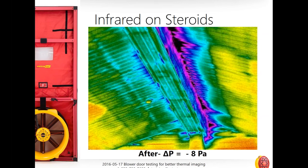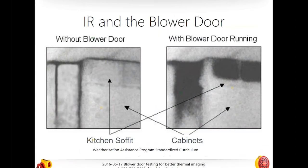When temperature is similar between inside and outside, just using a little bit of blower door can make a big difference. And even when there's quite a bit of temperature difference, it's really important to use the blower door with the infrared camera because it gives us images on steroids — it immediately makes a big impact and accentuates the differences in the thermographic pictures.